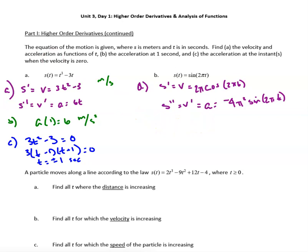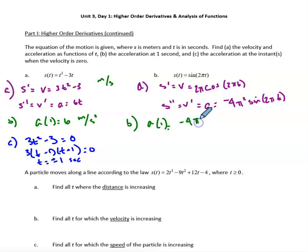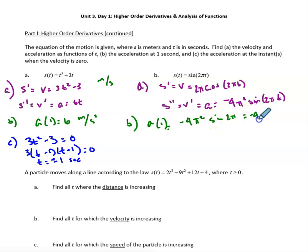That's part a. Part b asks for the acceleration at time equals 1. Acceleration at t equals 1 is negative 4π squared times sine of 2π times 1, which is sine of 2π, and sine of 2π equals 0. So the answer is negative 4π squared meters per second squared.